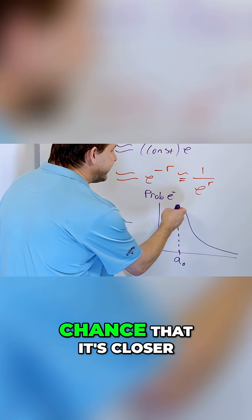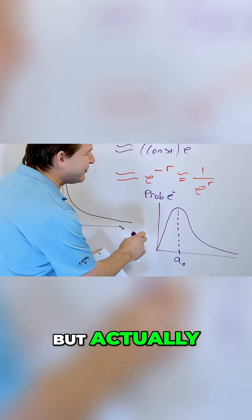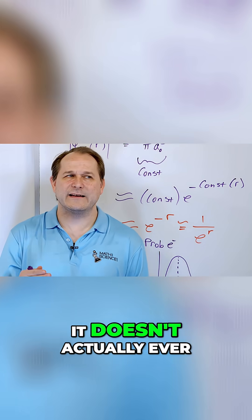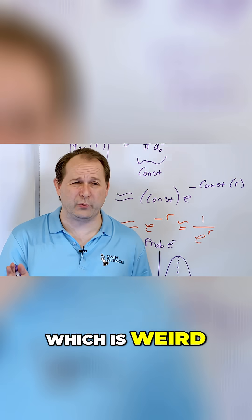But there is a chance that it's closer to the nucleus. Notice how the probability falls off and approaches zero. But actually, interestingly, it doesn't ever get to zero. So there is a small chance the electron can be in the nucleus, which is weird.